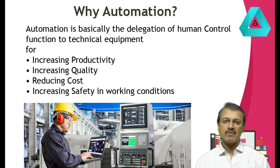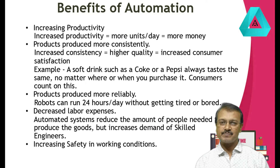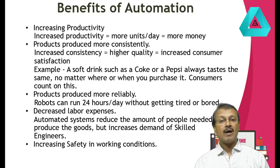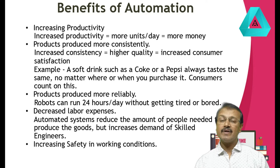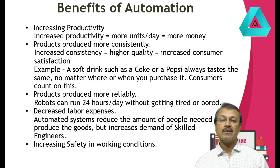Why do we need automation? Why are we not using humans in industries? Let's see the benefits of automation. First, increasing productivity means more units per day, that means more money. Product produced more consistently means increased consistency, which means higher quality. Higher quality means increased consumer satisfaction. A consumer will always buy the product if they get the same product, same quality, same quantity each time. For example, a soft drink you buy always tastes the same, no matter where or when you purchased it.